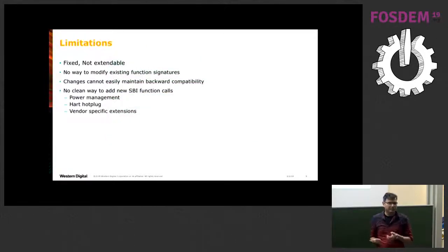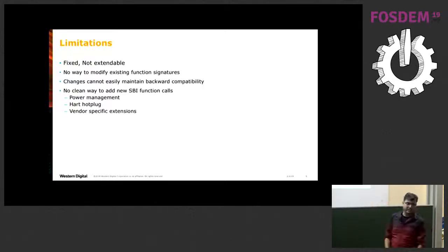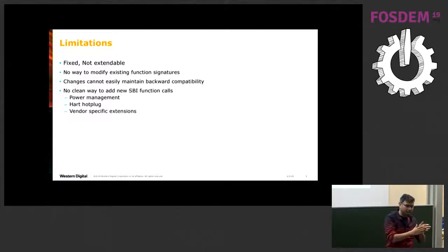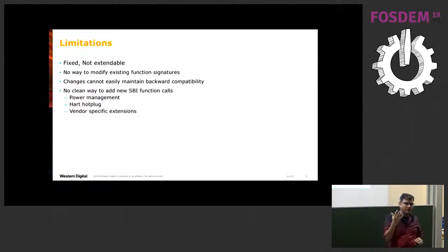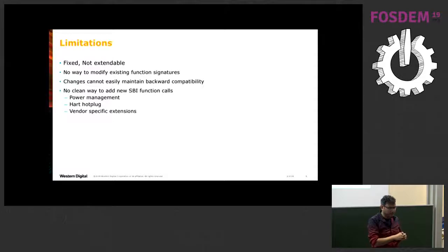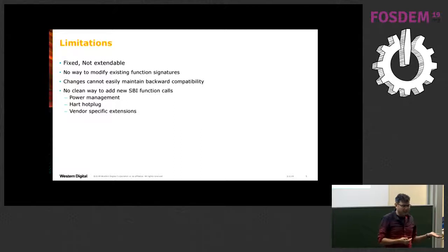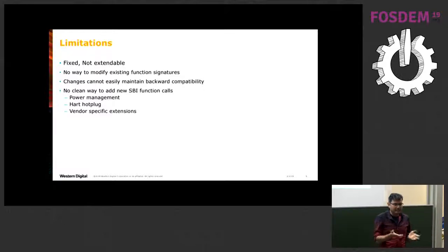What's the problem with it? Why is it limited or why do we need to change it? First, it's fixed — there are eight APIs and those are fixed. There is no present way to extend it, and if we add new functionality we are probably going to break backward compatibility. That's where we need a specification that allows modifying, adding, or removing functions without breaking backward compatibility. Features like power management and CPU hot-plug are necessary and required for any systems built today.